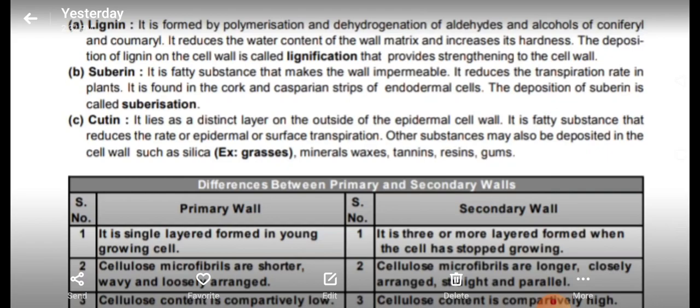Cutin lies as a distinct layer on the outside of the epidermal cell wall. It is a fatty substance that reduces the rate of epidermal or surface transpiration. Cutin is present on the outer surface of the epidermis and reduces water loss from the surface of plant parts. Other substances may also be deposited in the cell wall, such as silica — for example, in grasses.